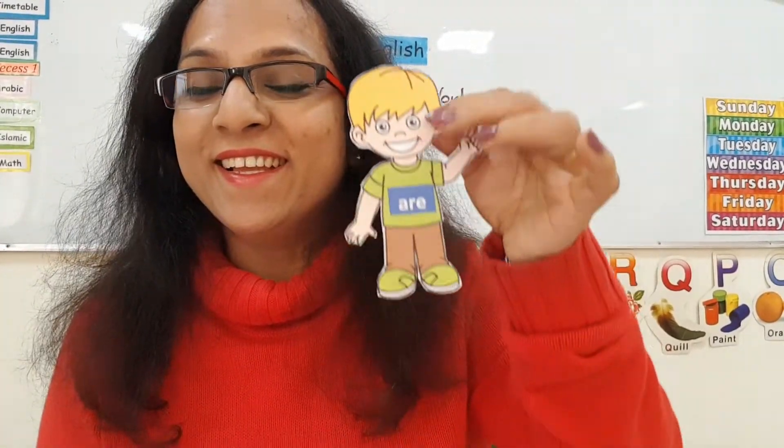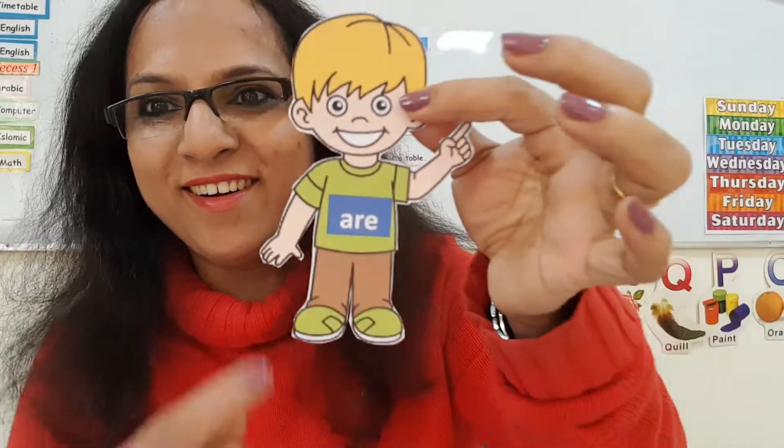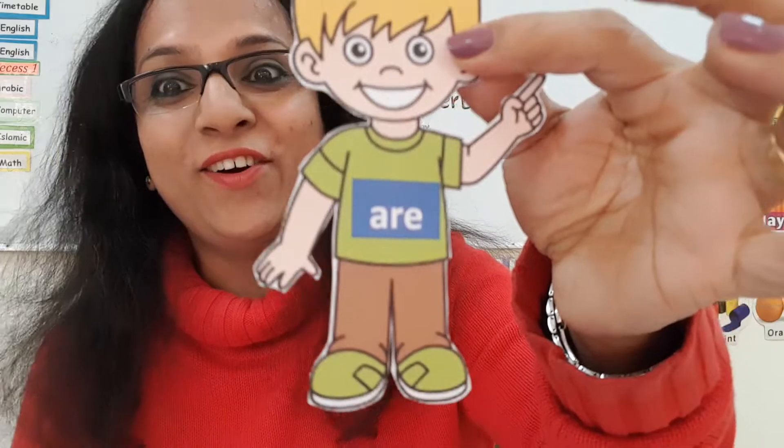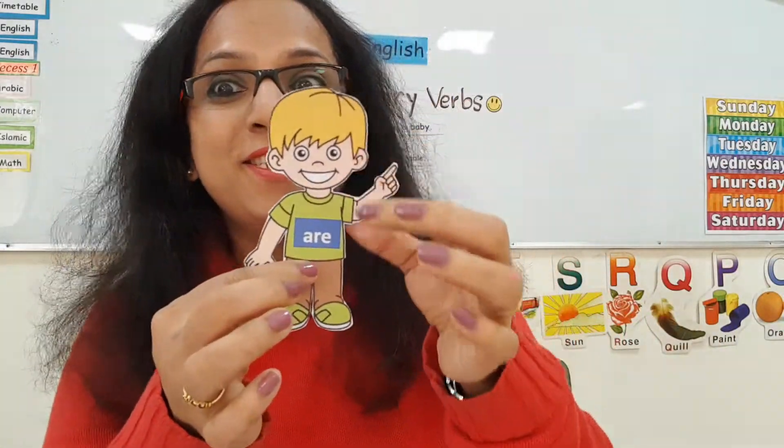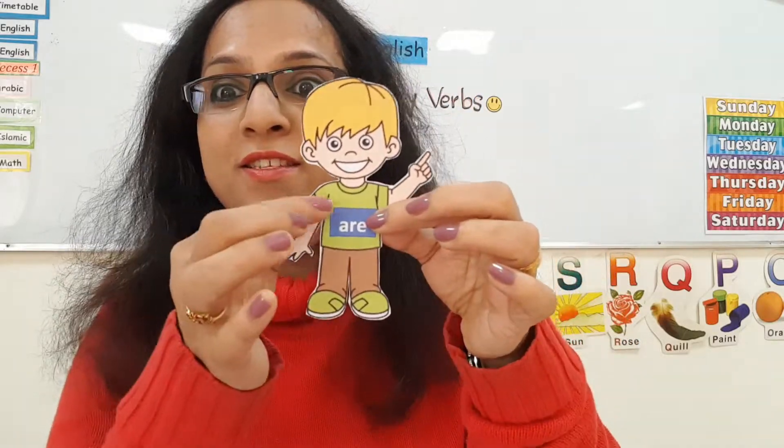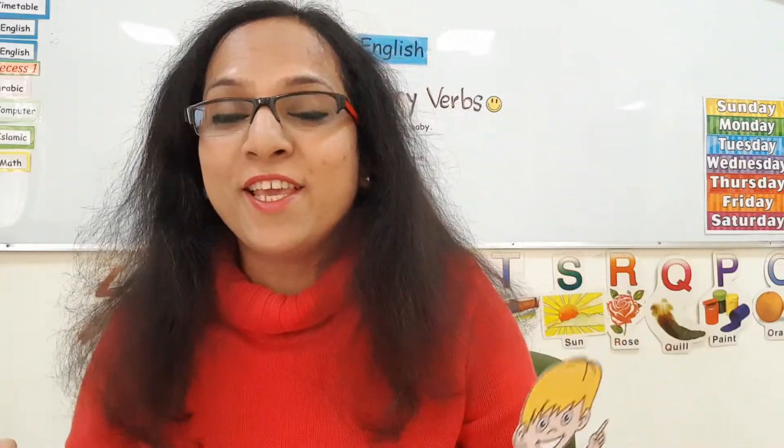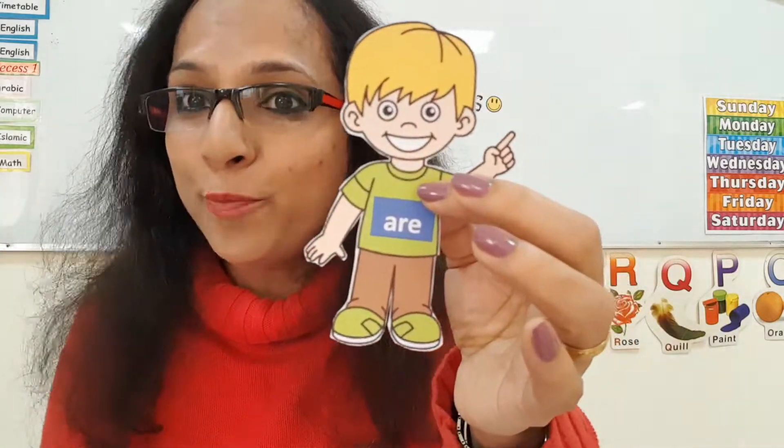Now let's see the third brother. We said there were three brothers. The third brother is ARE. What is his behavior? He is different from the other two brothers. This third brother had many friends — a lot of friends. He always wants to hang around with a lot of friends, meaning a lot of people, a lot of animals, a lot of objects. A lot means plural.